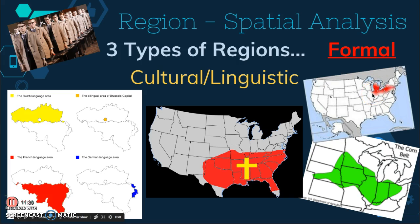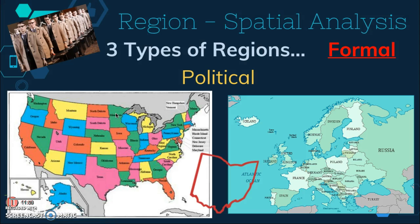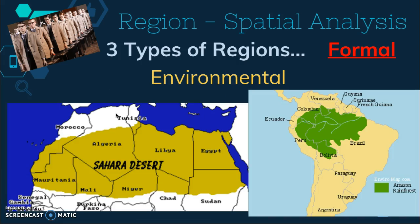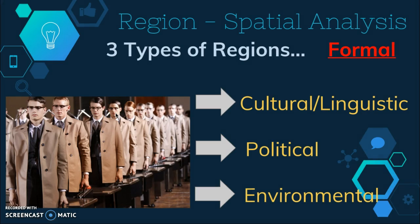A linguistic region is when everyone speaks the same language — people may be different culturally but share the same language. For example, Belgium has different linguistic areas. A political region is easy to define because all political places have well-defined borders and an overarching government — examples include the United States, Ohio, and Europe. Environmental regions have transitional but measurable boundaries; examples are the Sahara Desert or the Amazon Rainforest. All three of these — cultural, political, and environmental — fall under the umbrella of formal regions.